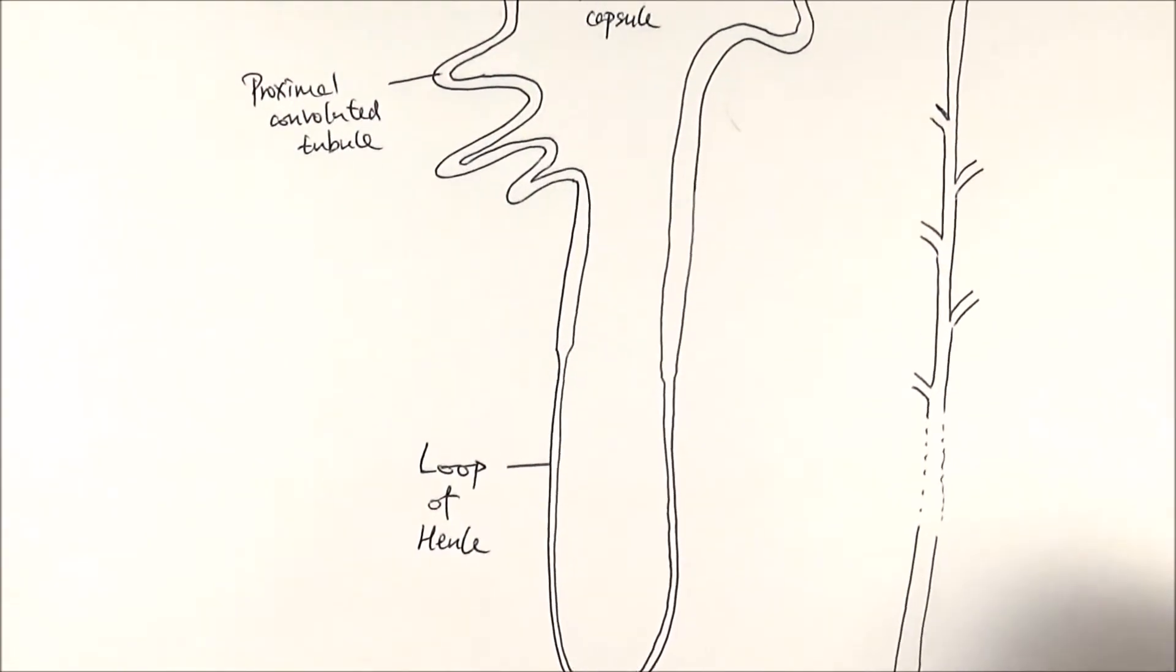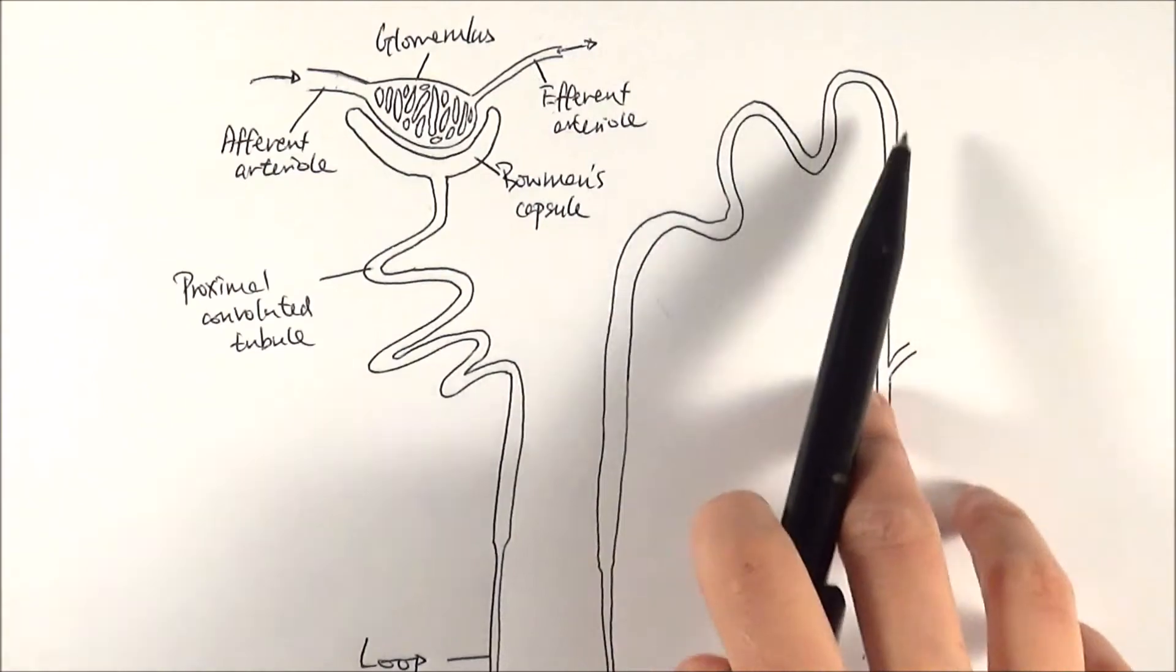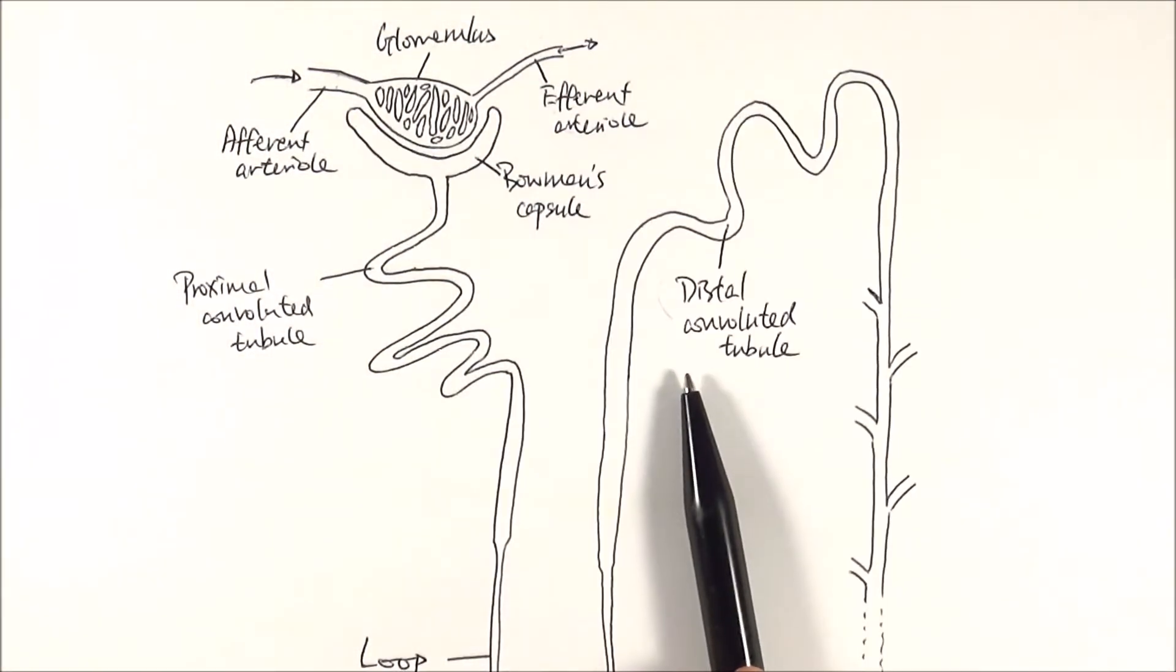So after the loop of Henle, it will then travel up this way and it goes to the distal convoluted tubule here. Also called the second convoluted tubule, contributes to more water and salt reabsorption depending on the situation and condition of your body.